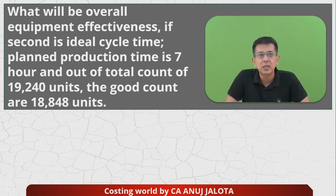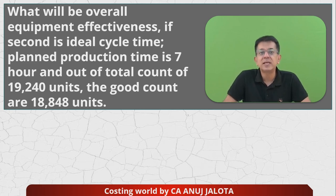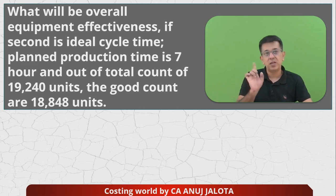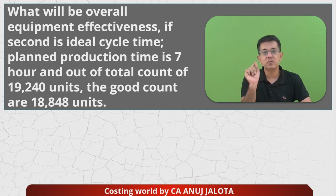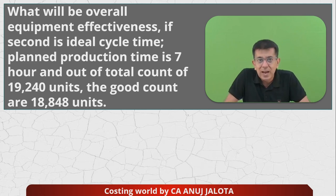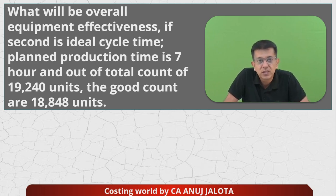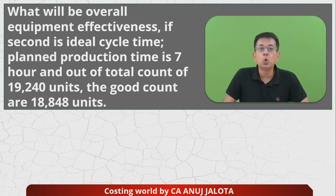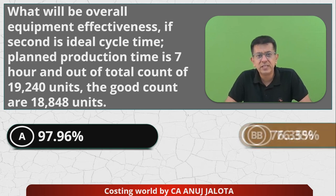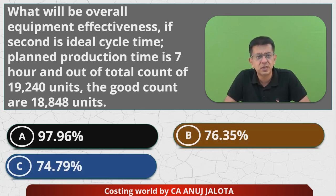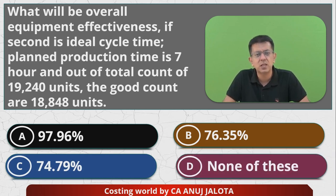So we have a question where we have to find out OEE — Overall Equipment Effectiveness. The ideal cycle time is one second, meaning one unit should ideally take one second to get manufactured, so the standard time is one second per unit. Planned production time is seven hours. Out of a total count of 19,240 units, the good count is 18,848 units. The four options are 97.96%, 76.35%, 74.79%, and none of the above.